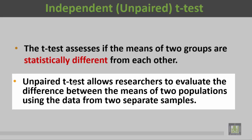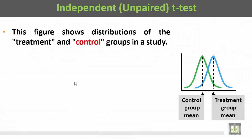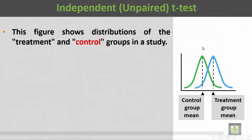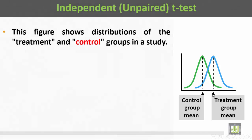This figure shows the distribution of the treatment and control groups in a study. In green, this is the control group — this is the distribution of the values for the control group and this is the mean for the control group. In blue, this is the distribution for the values of the treatment group and this is the mean for the treatment group.